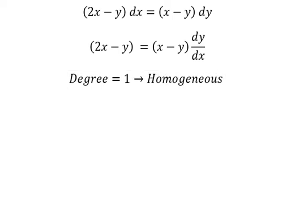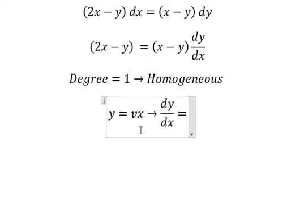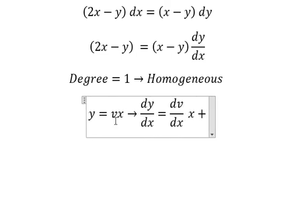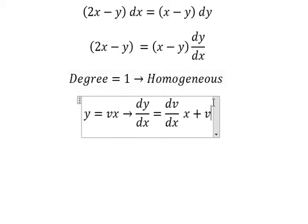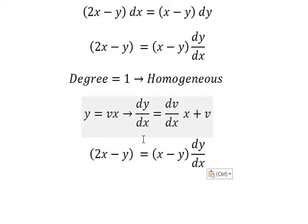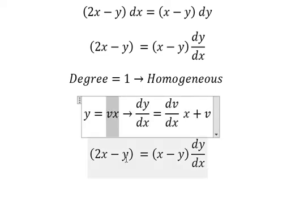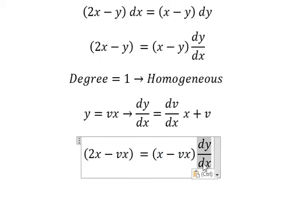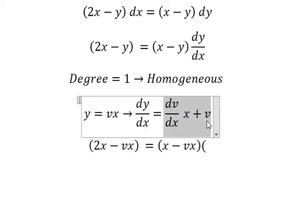So I will put y equals to vx. Later that we do the derivative for both sides. The derivative of v, we have dv over dx multiplied by x. The derivative of x, we have number one. So we have v. So I will put this one here and here. dv over dx, we change by this one.